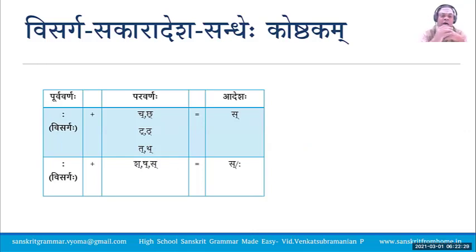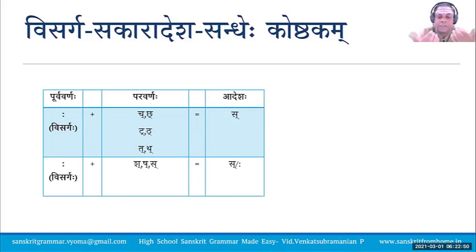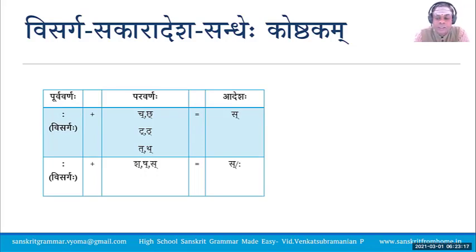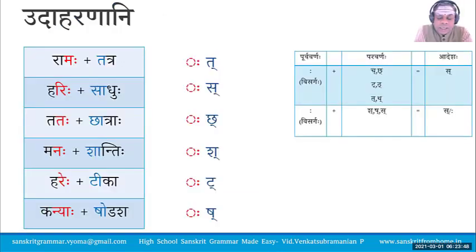Looking at the table of Visarga Sakaradesha Sandhi: Visarga plus Karkashavyanjana — here what is left out is Kukha and Pupha (which we will see in the next Sandhi). Visarga plus Karkashavyanjana except Kukha and Pupha will become Sakaradesha. This Sandhi is Nitya and Sakara definitely comes. If Visarga is followed by Shushu (also Karkashavyanjanas), there are two possible answers: Visarga gets converted to Sakara, or Visarga once again becomes Visarga itself.